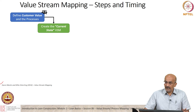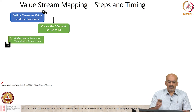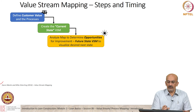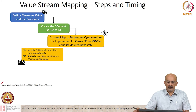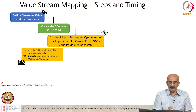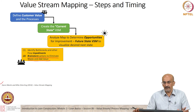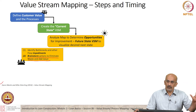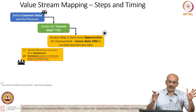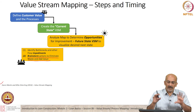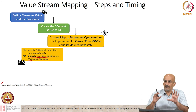Create the current state VSM — we have to understand what goes into it. Then analyze the map to determine opportunities for improvement for the future state. We need to identify bottlenecks and other flow issues and brainstorm. Value stream mapping is not a single person or single team exercise; it is a group exercise for getting ideas on how the whole stream works, because people generally have a siloed view. You need to integrate the silos, so you need people who can collaborate and understand what happens from sub-process to sub-process.